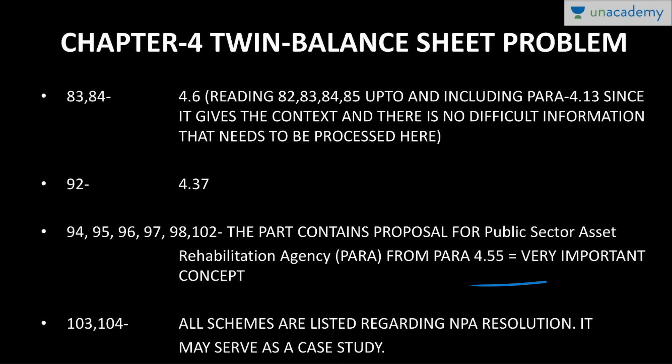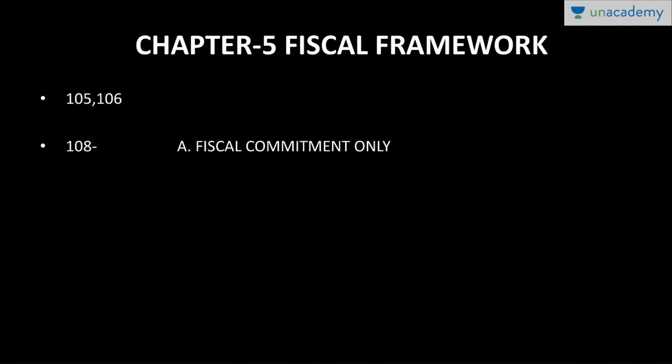Pages 103-104 list all schemes regarding NPA resolution — you can read it as a case study. Chapter five on fiscal framework covers pages 105-106, titled 'The World is Changing, Should India Change Too?' It is a very small chapter of 5-6 pages. Page 158 covers fiscal commitment and is important to read. Chapter six on fiscal rules and lessons from the states is the least productive chapter, so don't worry much about it.